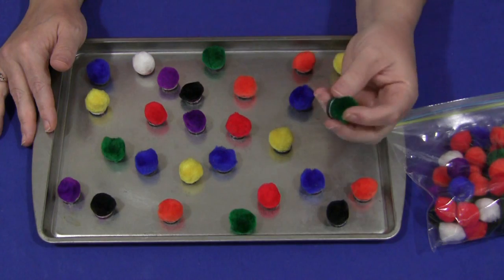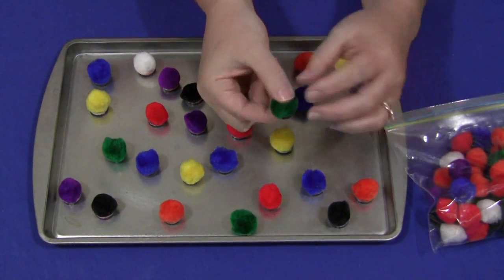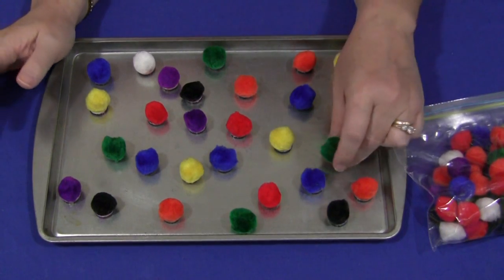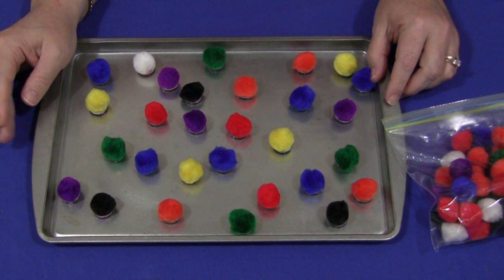They're foam magnets and they just peel the paper off and then they stick to whatever you want them to, but they work really well with the pom-poms. You also need to have some kind of a magnetic tray or cookie sheet for the children to work on.